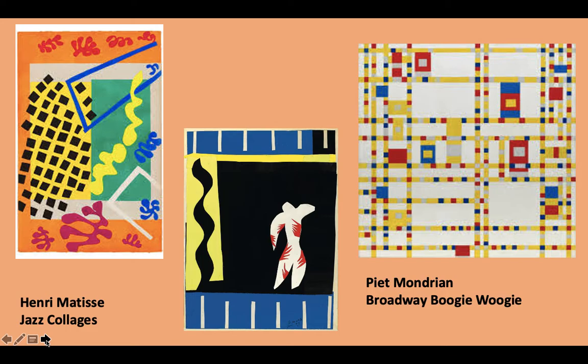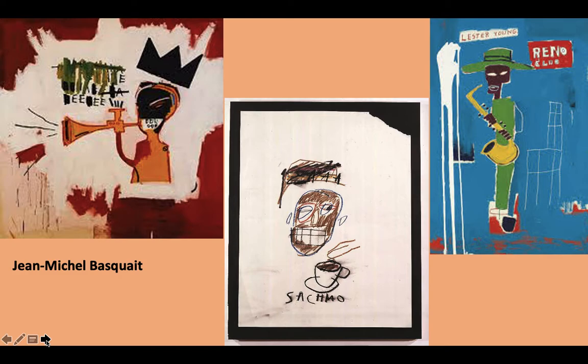Jean-Michel Basquiat was an American, Haitian, and Puerto Rican artist who became famous for his graffiti art. He was very inspired by jazz and made paintings of his jazz heroes. In the middle, you can see a drawing he made of Satchmo, who we just learned is Louis Armstrong.